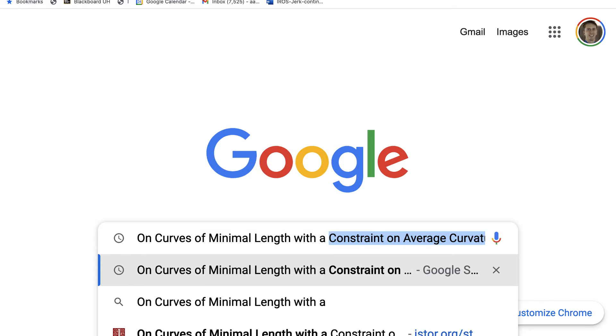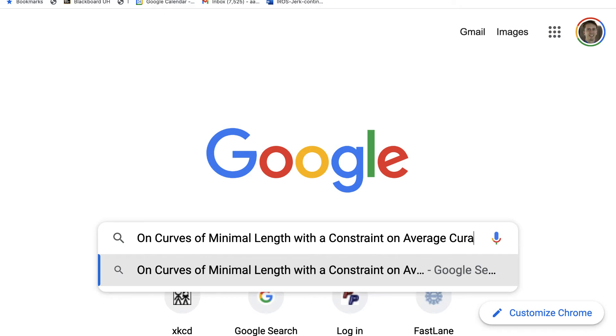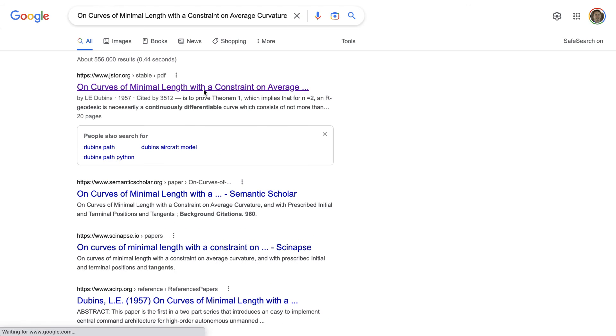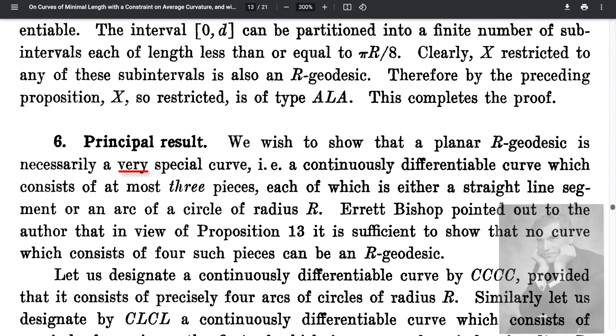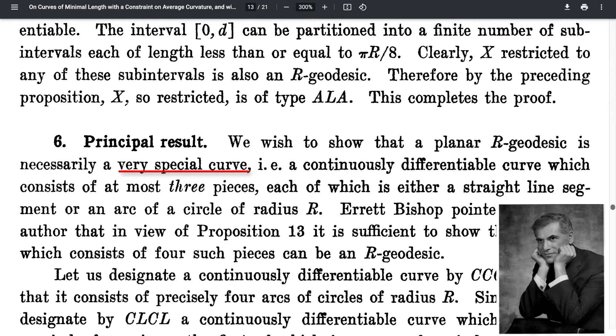Way back in 1957, Lester Eli Dubins proved that the shortest path between two xy theta coordinates for a forward moving vehicle with a minimum turning radius R-min is composed entirely of no more than three segments, which are each either circular arcs of radius R-min or straight lines.